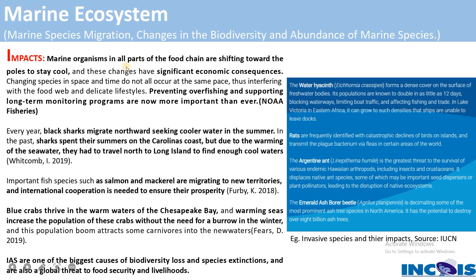Marine organisms across all parts of the food chain are shifting toward the poles to stay in cooler water. We have seen how the marine ecosystem is affected through marine species migration and changes in biodiversity and abundance. Some species are already moving further toward the poles to find cool water, which has significant economic consequences. Changes in species across space and time do not all occur at the same rate, causing changes in food webs and delicate ecosystems.